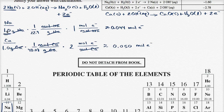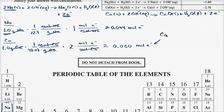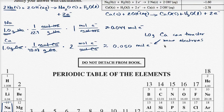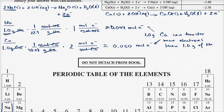You can see right from this calculation that 1.0 gram of calcium can transfer more electrons — 0.050 mol — than 1.0 gram of sodium — 0.044 mol. So we see very clearly that calcium would be the better anode material when comparing equal masses. The calculation is complete.